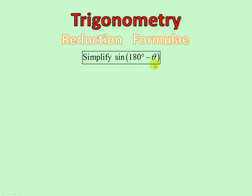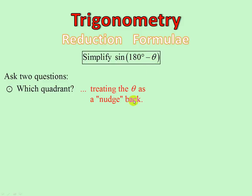Simplify sin(180 minus theta). Now let's establish a system. We've already done it in reducing actual angles, so now let's get a bit more theoretical. I'm going to ask two questions. First of all, which quadrant is that in? What we'll do is think of theta as a nudge — whatever the angle is, we think of it as a nudge, pushing it in that direction. So it means go to 180 degrees, then push back just a little bit into a quadrant. And we say, where does it push us back into? It's going to push us back into the second quadrant.